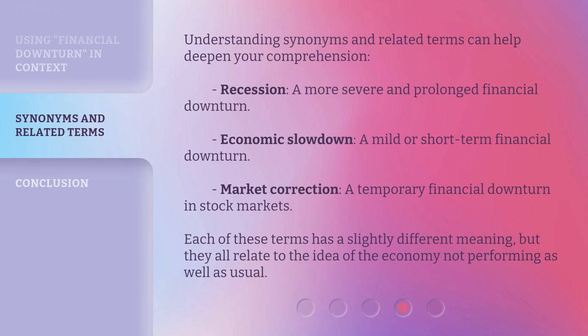Understanding synonyms and related terms can help deepen your comprehension. Recession: a more severe and prolonged financial downturn. Economic slowdown: a mild or short-term financial downturn. Market correction: a temporary financial downturn in stock markets. Each of these terms has a slightly different meaning, but they all relate to the idea of the economy not performing as well as usual.